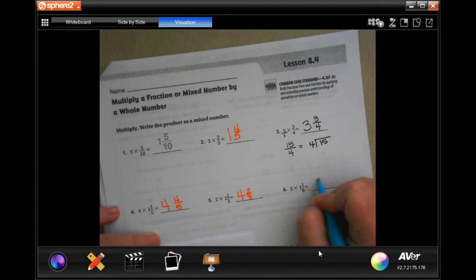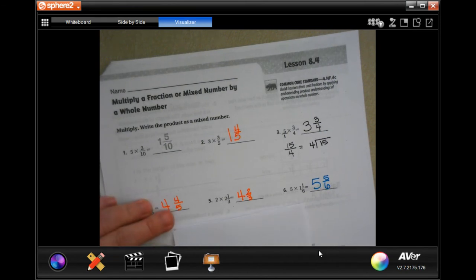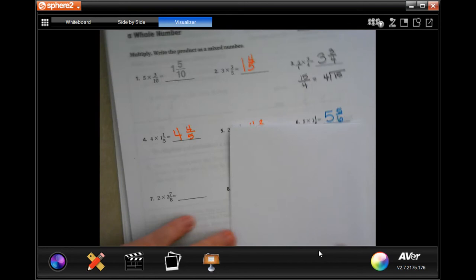So 5 times 1 is 5, 5 times 1 is 5 again, and our denominator stays the same. Can you turn it into a mixed number? Absolutely. I will show you how right now.